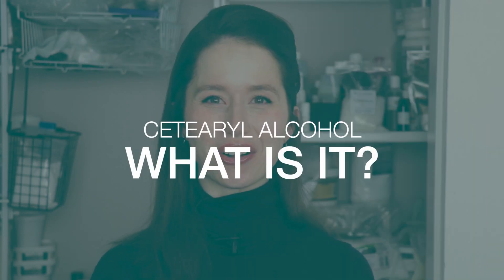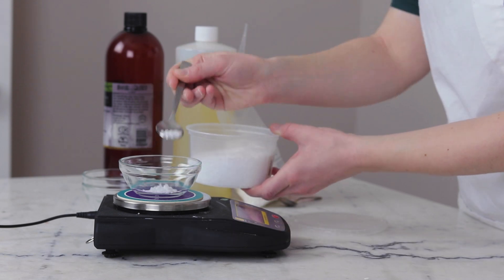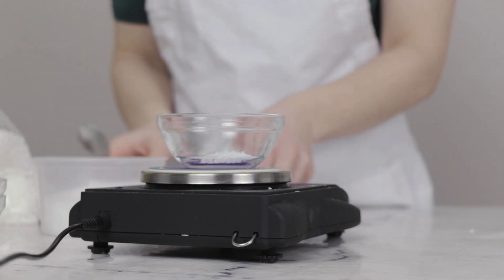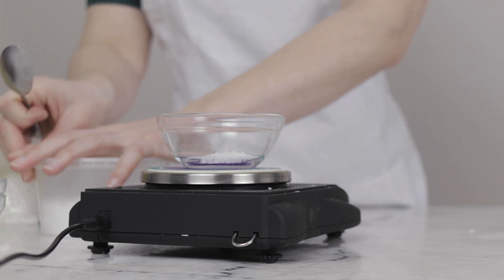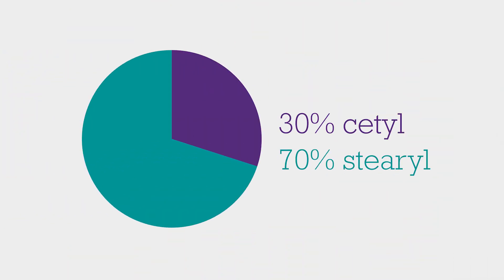What is satiral alcohol? Satiral alcohol is a blend of subtle alcohol and sterile alcohol. Settle and sterile alcohols are both saturated fatty alcohols — you can purchase them independently, though I find that subtle alcohol is quite a lot easier to find than sterile alcohol. Satiral alcohol is available in a variety of different blends, so it's really important to know what blend you've got. Your supplier should provide you with this information. The satiral alcohol I use in my formulations is 30-70, so it's 30% subtle alcohol and 70% sterile alcohol.